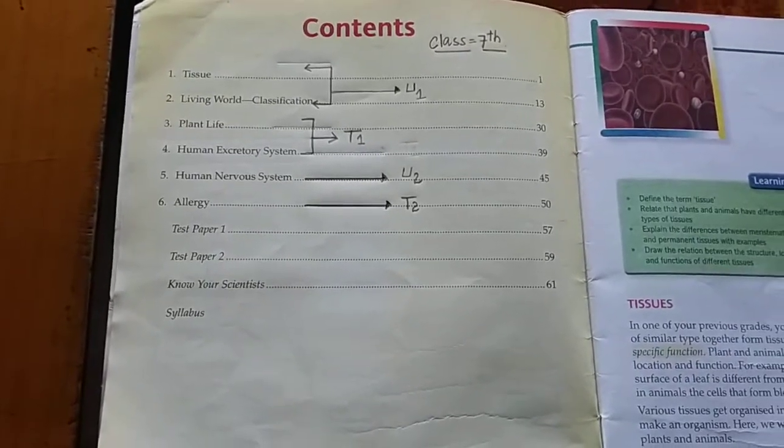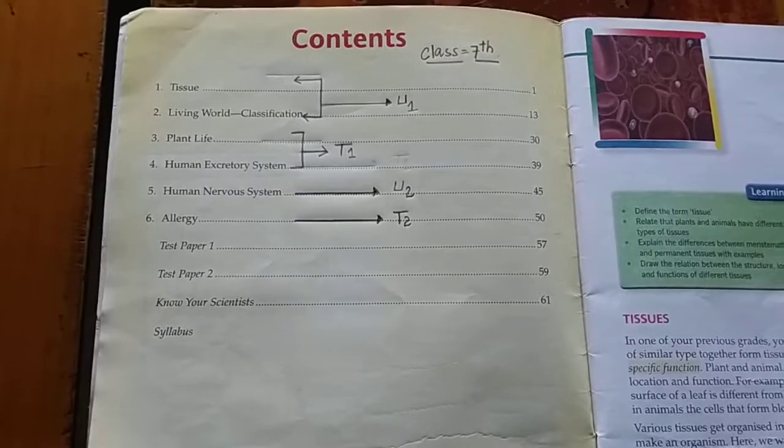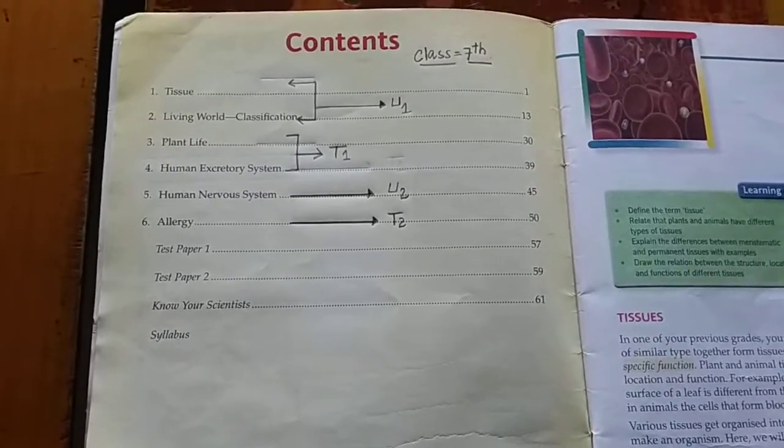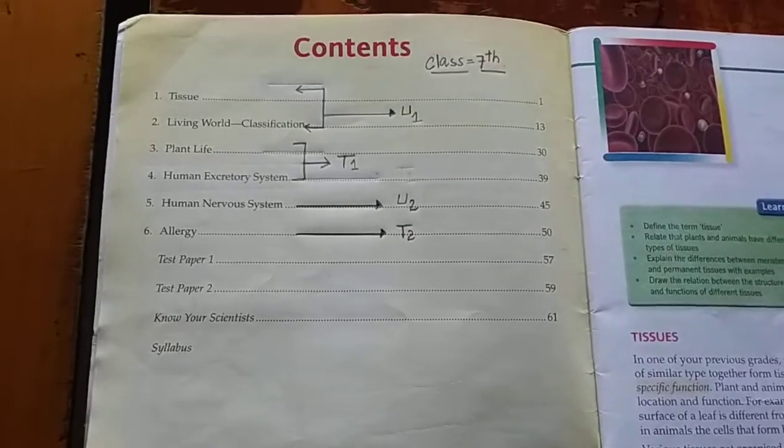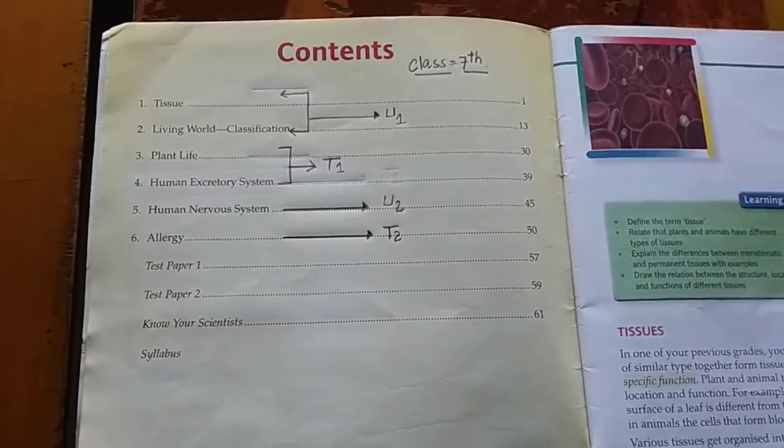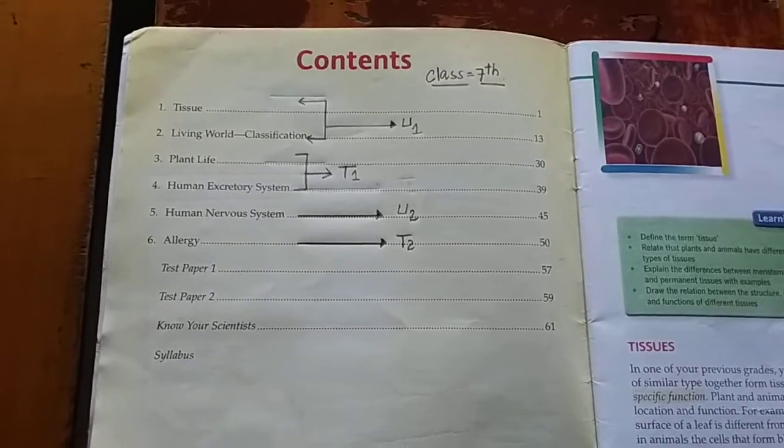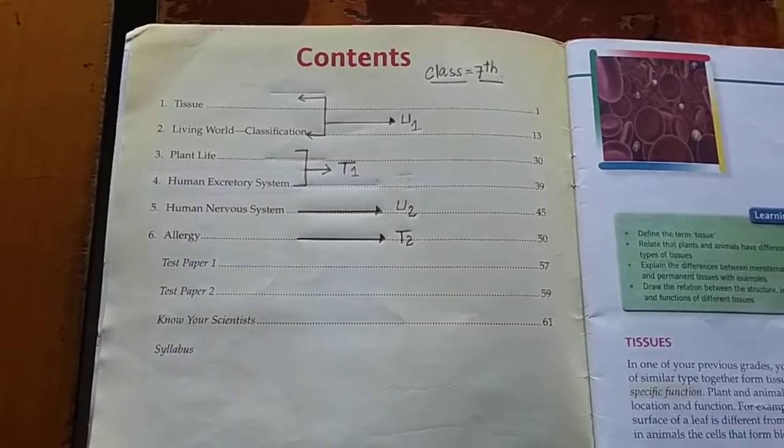In case of animals, we have to study four different types of tissues in detail: epithelial tissue, nervous tissue, connective tissue, and muscular tissue.